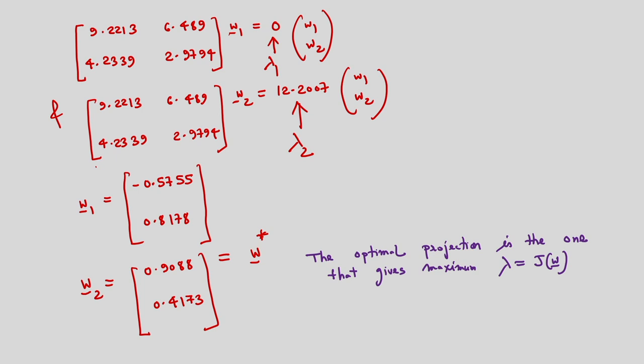The optimal projection is the one that gives the maximum lambda — that means corresponding to the maximum eigenvalue I have to find the best projection direction. The largest eigenvalue gives the best projection direction. This we can also obtain directly. In this example I am getting w2 as the best projection direction and I can obtain it directly.